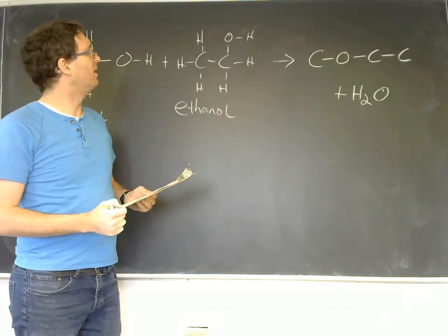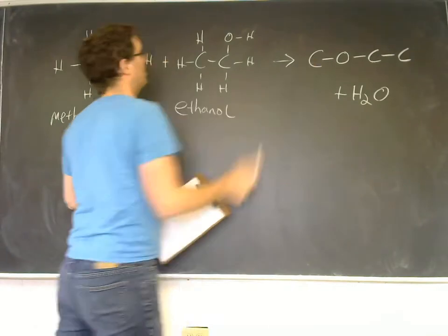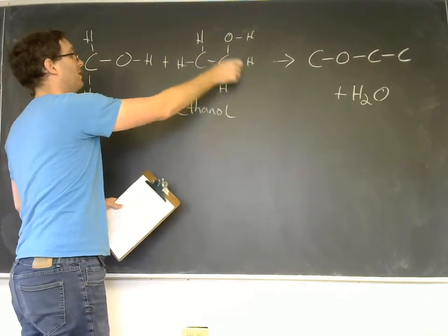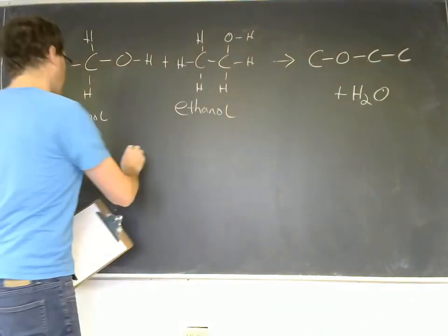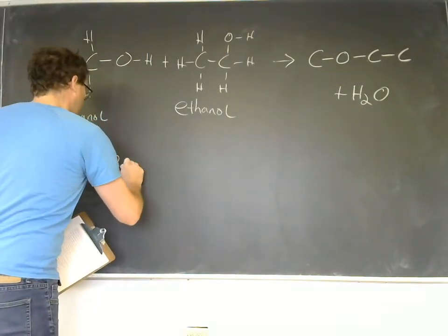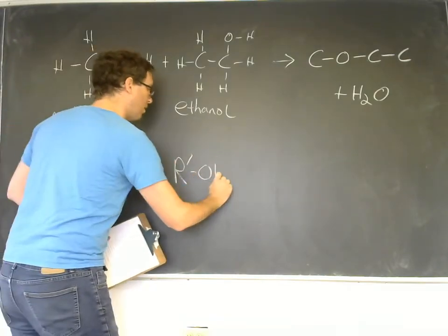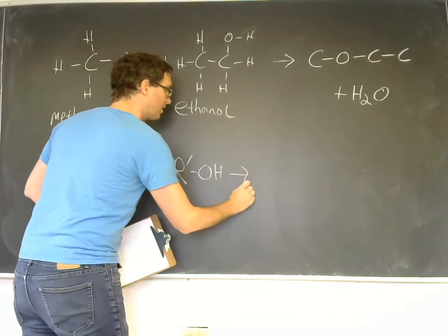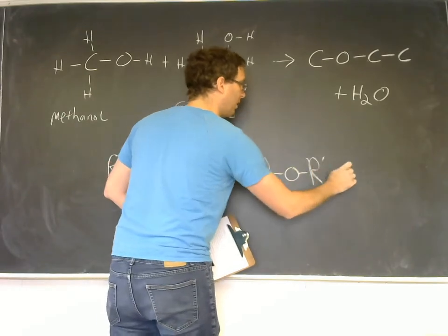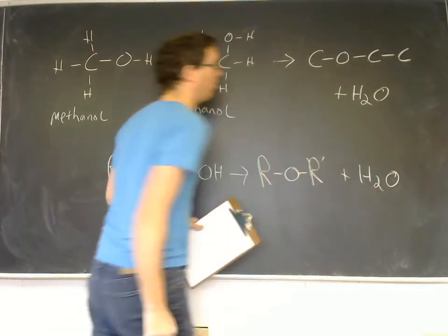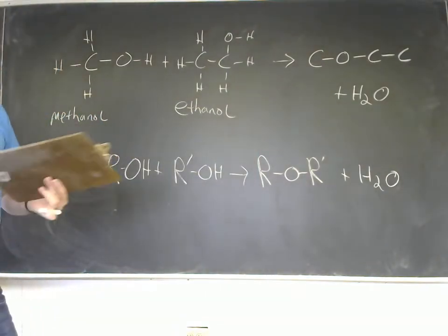Whatever the length is of this alcohol will be one side of the ether, and whatever the length is of that alcohol will be one side of the ether. So we could actually generalize this reaction to say ROH plus R'OH can form ROR' plus water. That is a general form of a dehydration reaction between two alcohols.